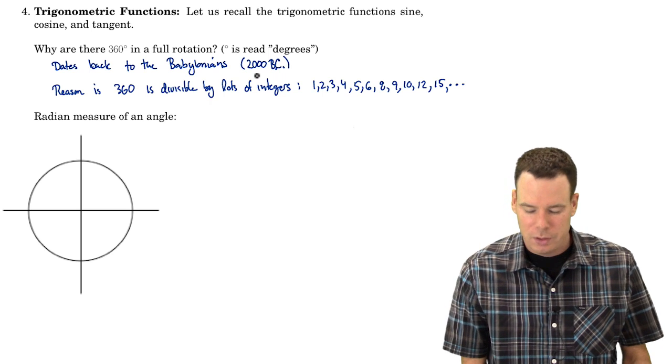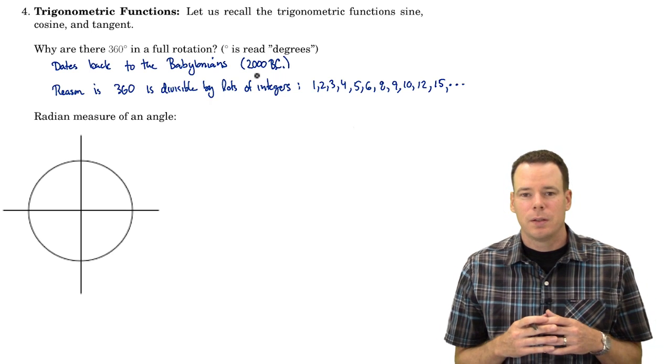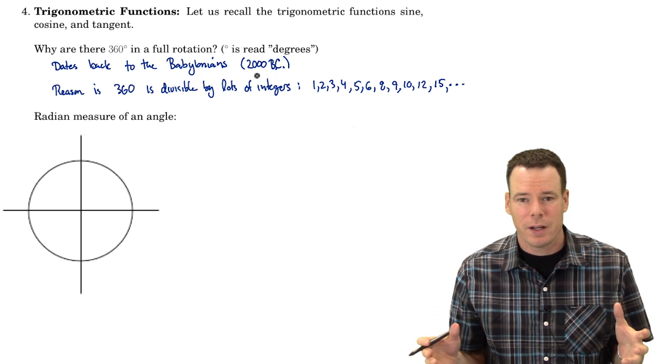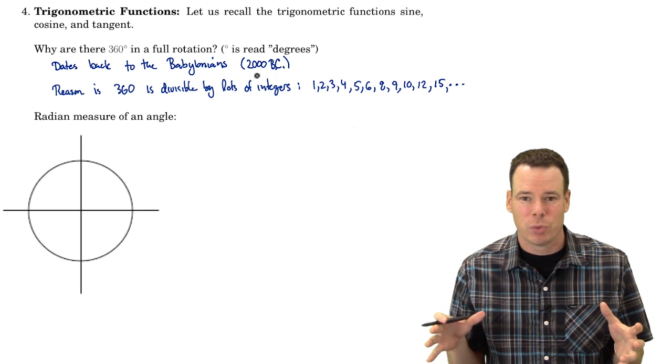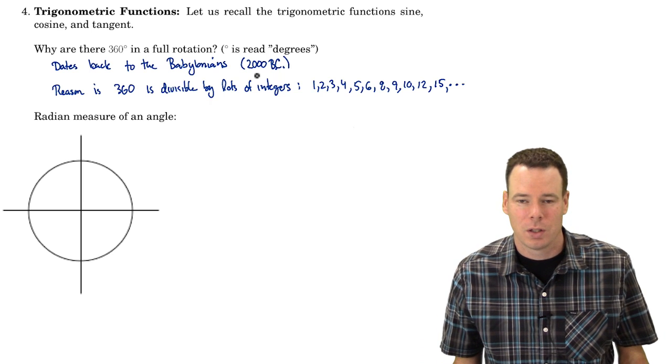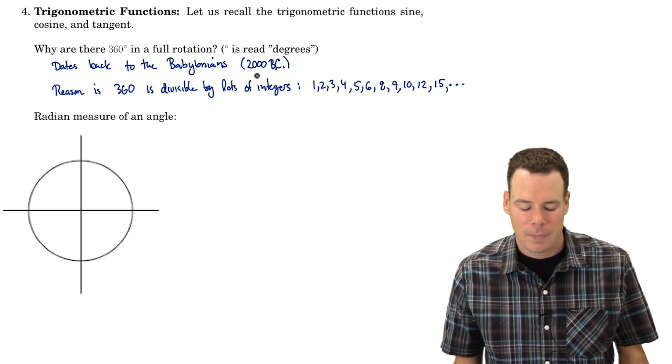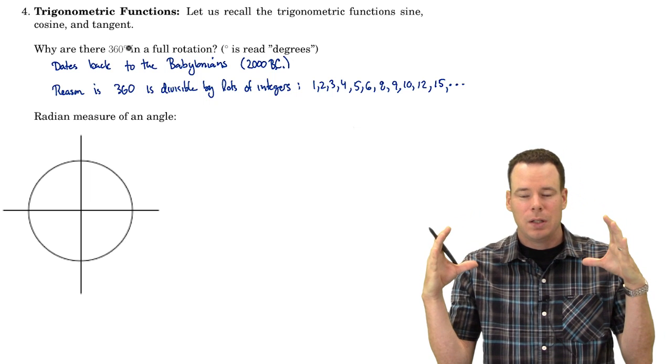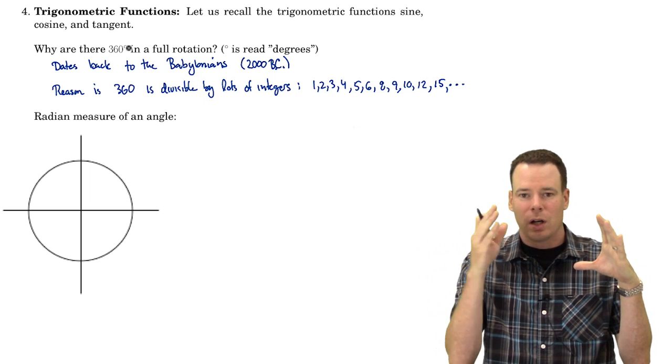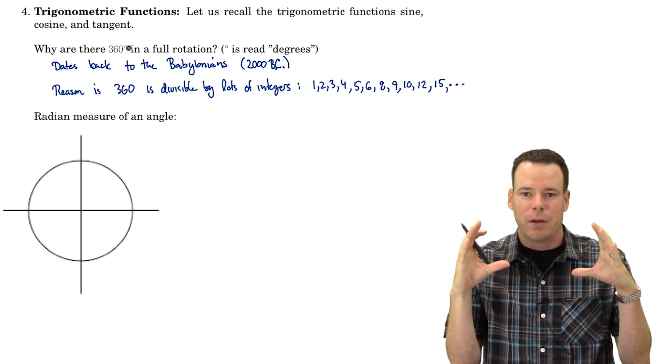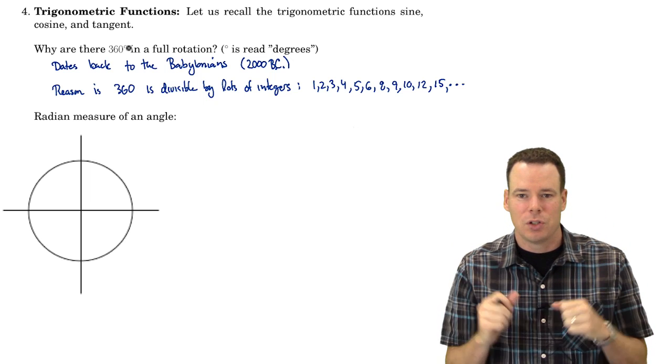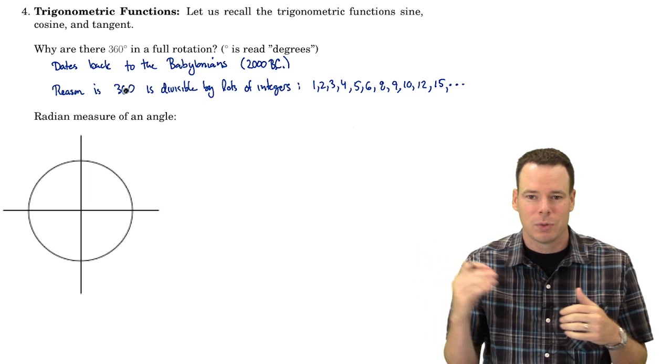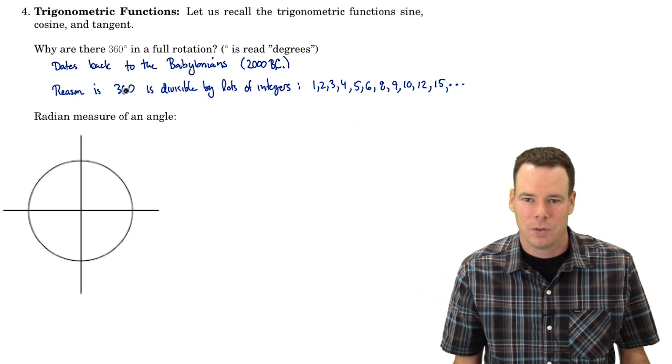So imagine you're in a society where working with integers is no problem, but working with fractions gets a little bit more troublesome. So you kind of want to avoid working with fractions, working with rational numbers if you can. And so you would pick a full rotation to be some integer value for which you can talk about fractions of that rotation with still using integers. And 360 was sort of that happy medium. It wasn't too big that it was unmanageable, but it was big enough that it was divisible by lots of integers.